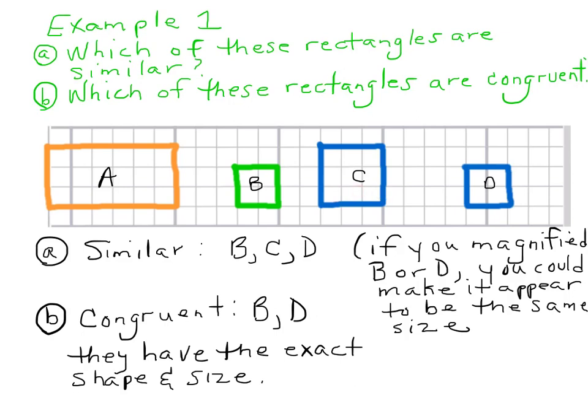It's one, two, three by one, two, three. It's a square. So, they're similar. All these three are similar. But if we look at congruent, B and D are the only ones that are congruent. And a way to think about that is if you want to see if B or D is similar to C, you could just magnify this, and you would see that it would fit exactly in there.